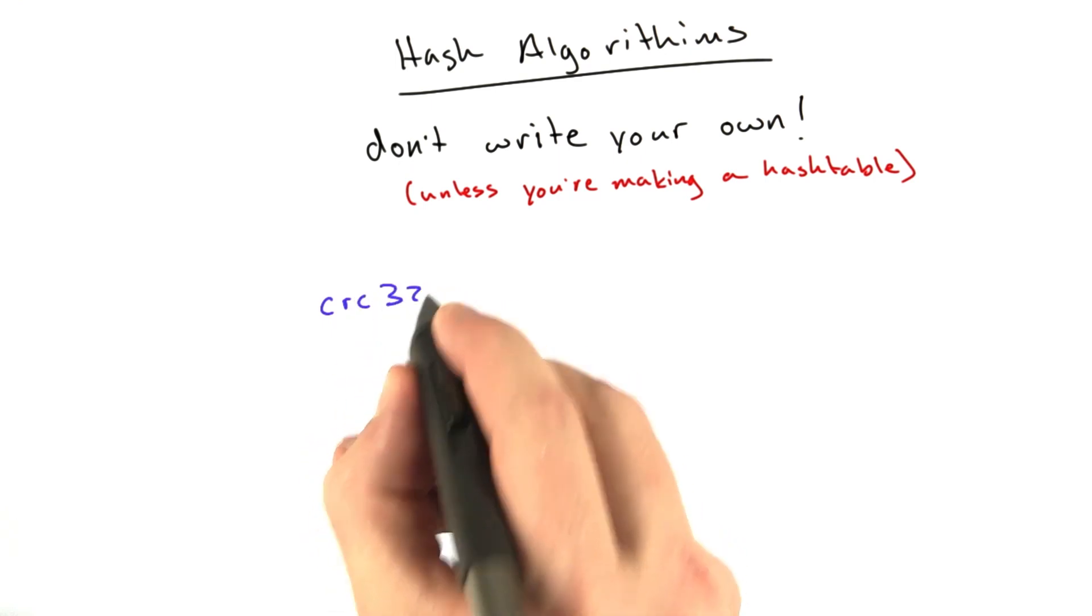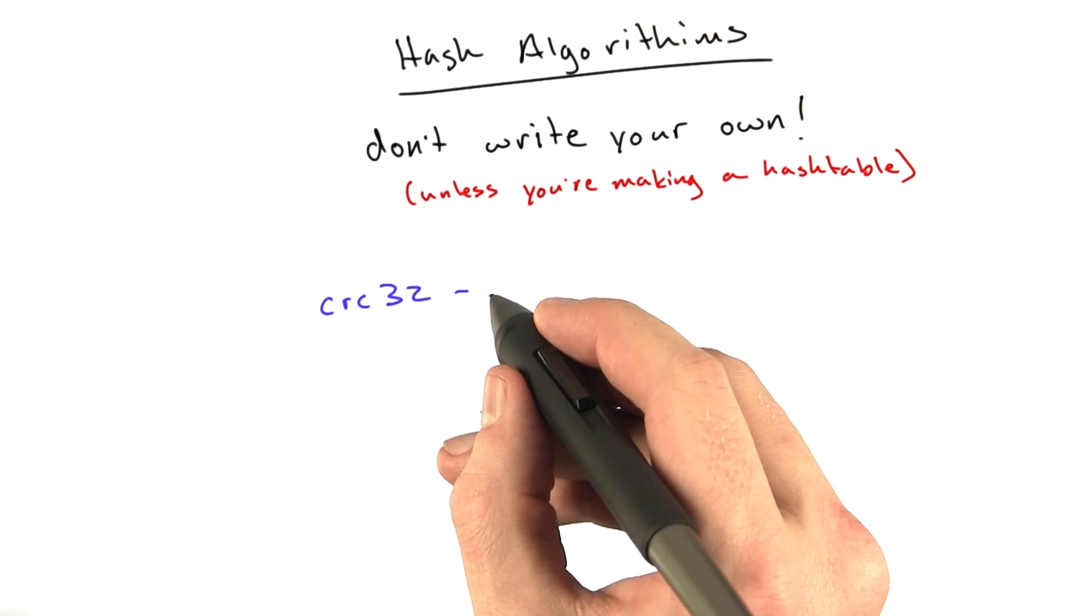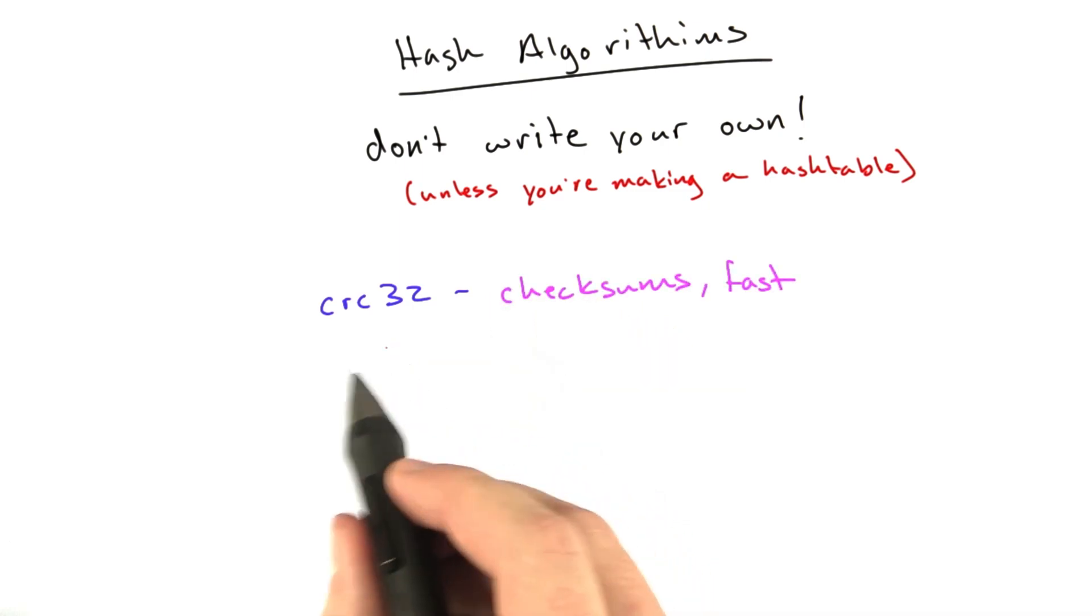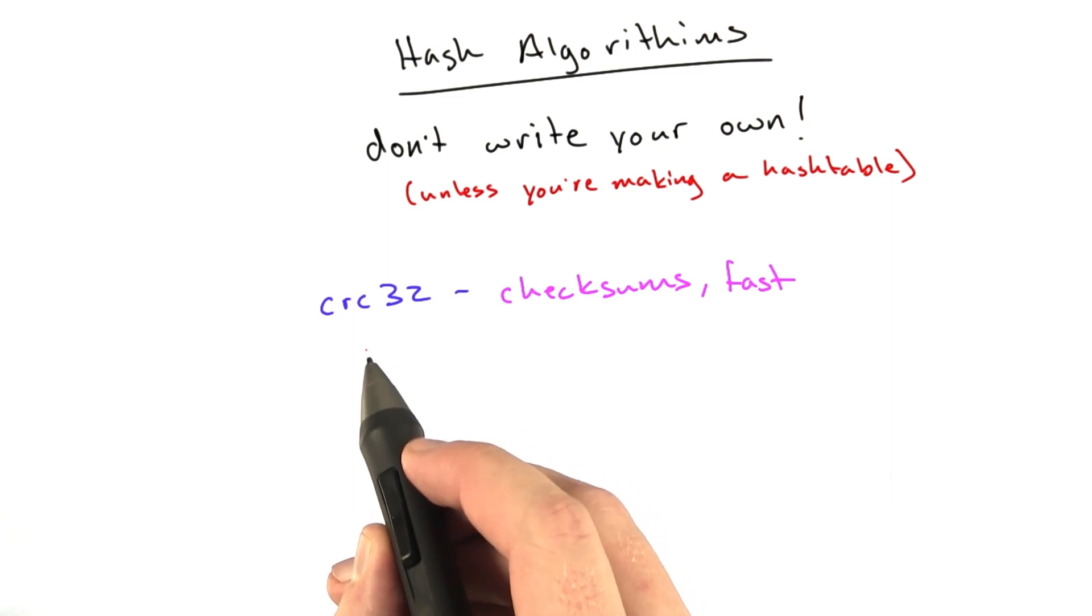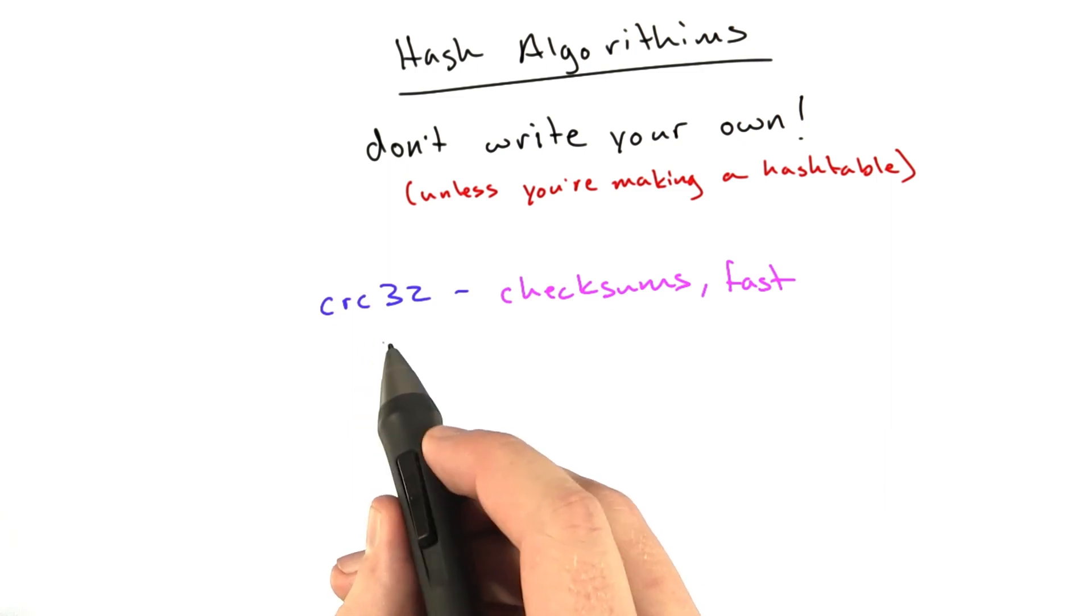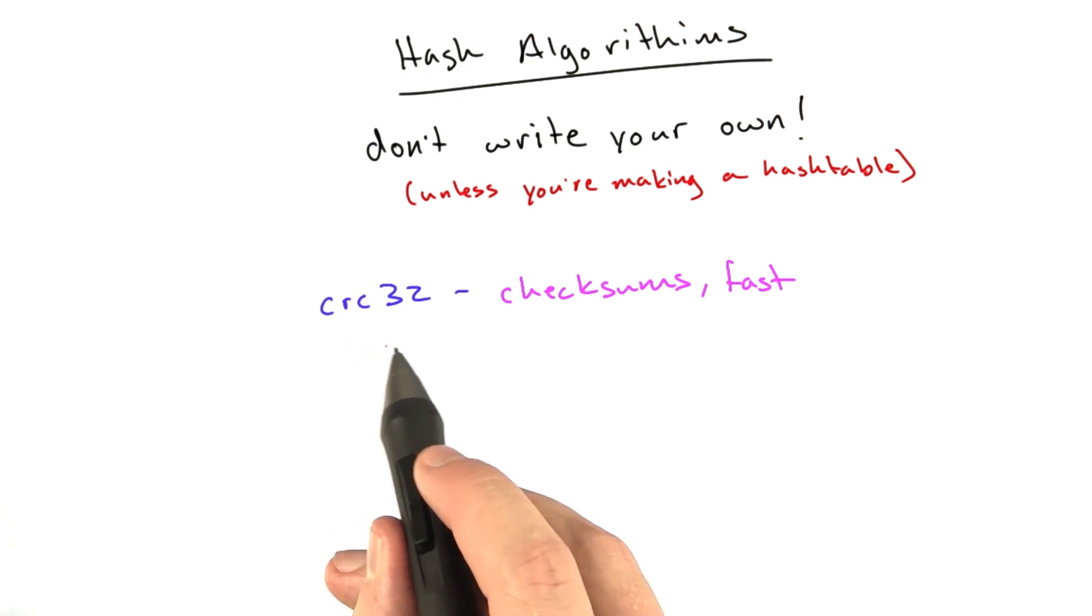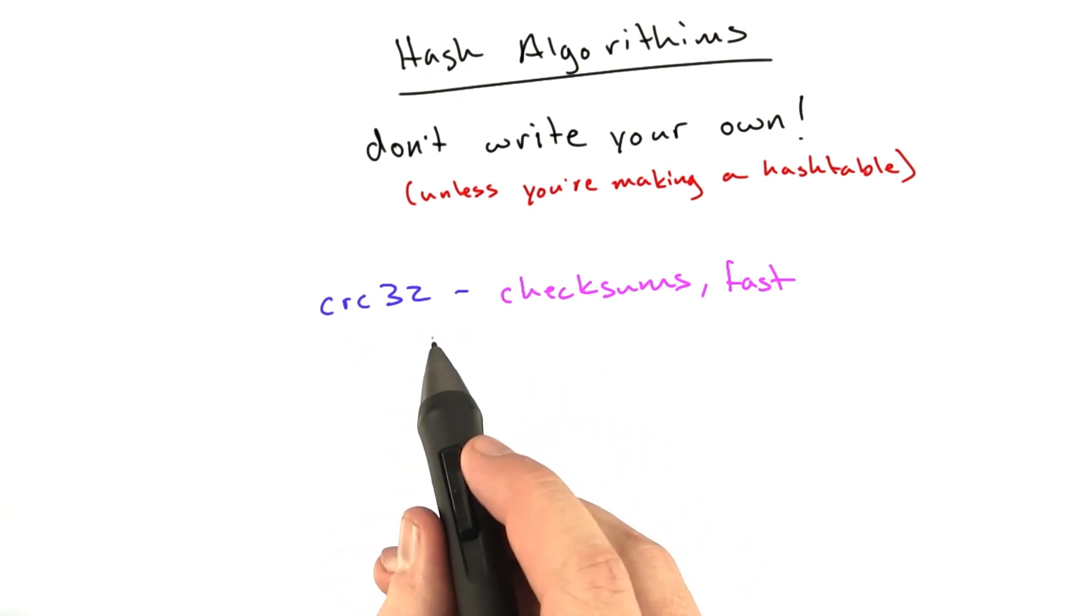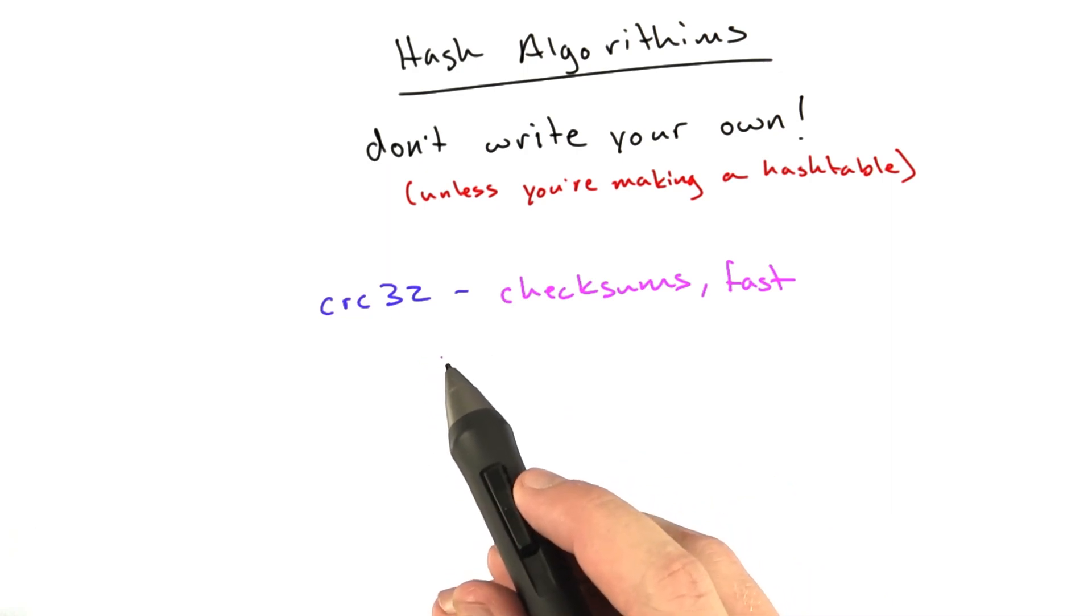Some popular algorithms are CRC32, which is basically designed for checksums. If you were to send somebody a bunch of data, like a big file, you might also include a CRC of that file. That is basically just a simple way to verify that you've got the entire file and it's not corrupted, because you can send a hash easier than you can send a whole file. You can copy and paste the hash. It's just a few bits.